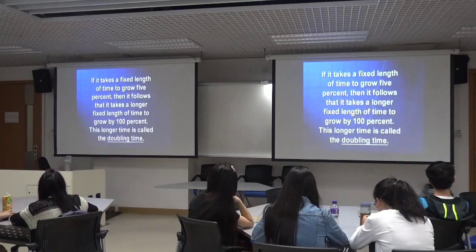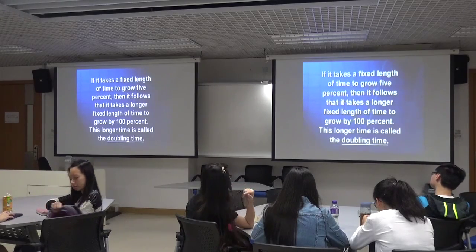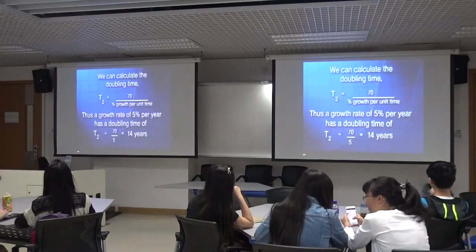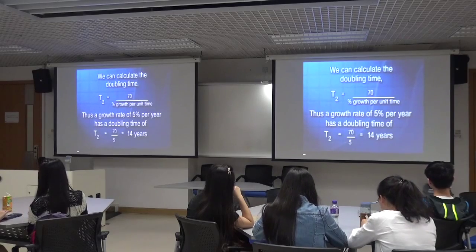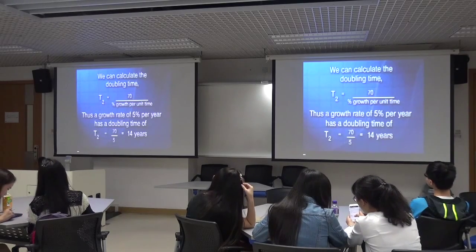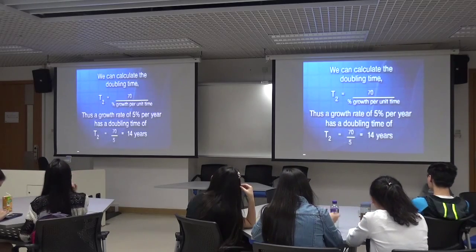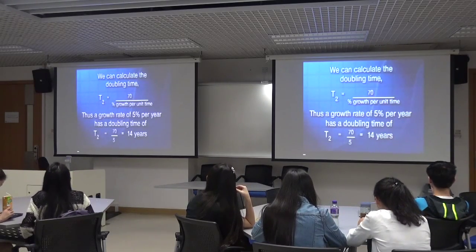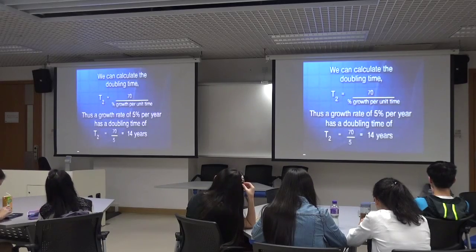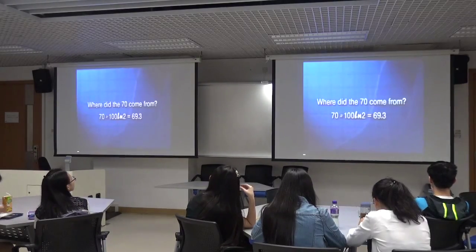If it takes a fixed length of time to grow five percent, it follows it takes a longer fixed time to grow 100 percent. That longer time is called the doubling time. To calculate it, you take the number 70 divided by the percent growth per unit time. For five percent per year, divide 70 by 5 and you find the quantity doubles every 14 years. The 70 comes from approximately 100 times the natural logarithm of two.